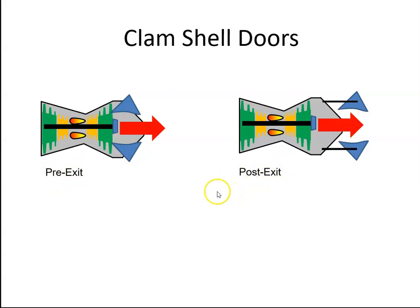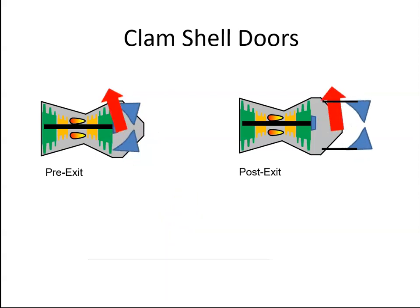When the aircraft lands and there's weight on the wheels, the pilot then selects the reverse thrust. Then the doors will close and the air is deflected back up. Now it is important that the clamshells can only operate when the weight is on the wheels. The squat switch is used to make sure that the system can't be operated unless there's weight on wheels.